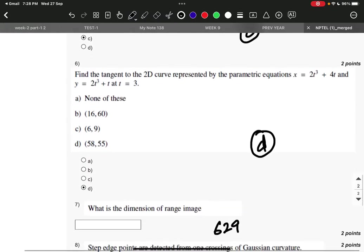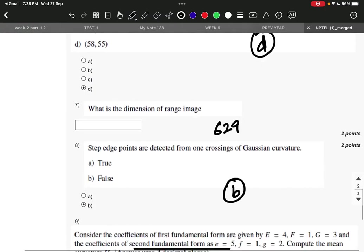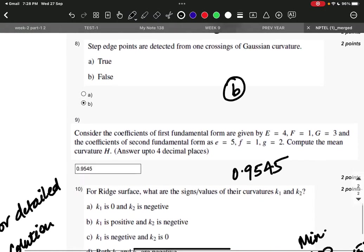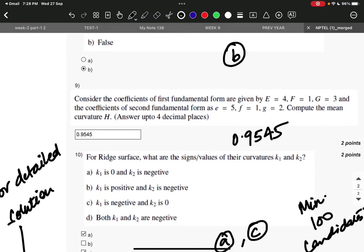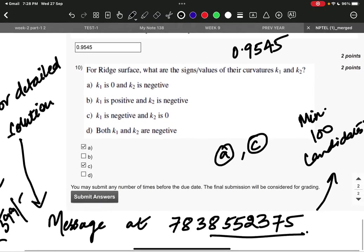Question 5 it is C. Question 6 it is D. Question 7 is 629. Question 8 it is B. Question 9 it is 0.9545 and question 10 it is A and C.